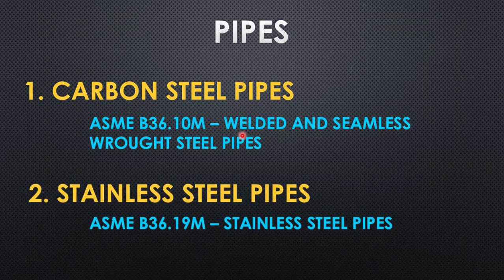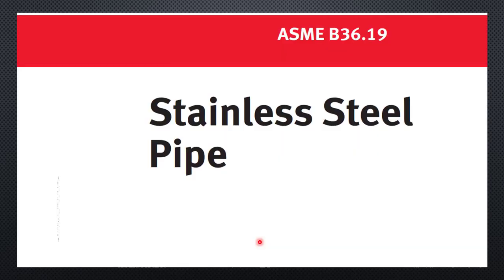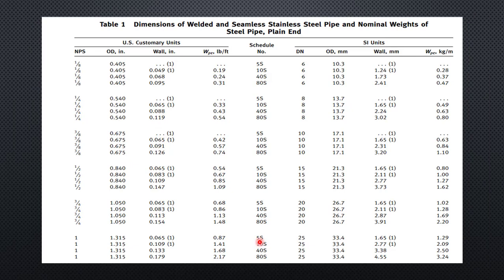Now let's go to stainless steel pipes. Stainless steel pipe dimensional details you will get from ASME B36.19M, which covers stainless steel pipes — this is how the cover page looks. Similar to carbon steel, you will get all these details from Table 1 of this standard: the pipe size, OD, wall thickness, and weight. Like the carbon steel standard, it is also available in both imperial and metric units.